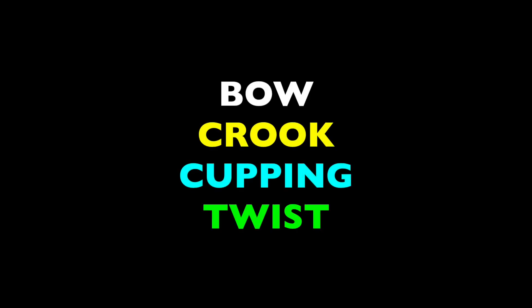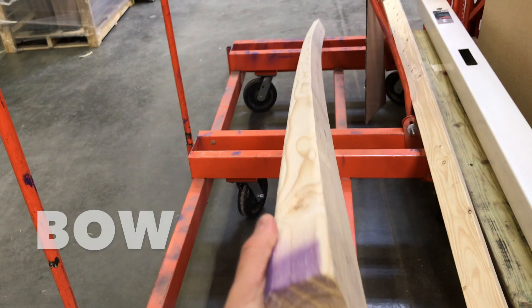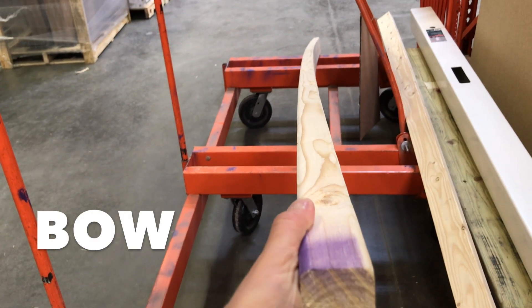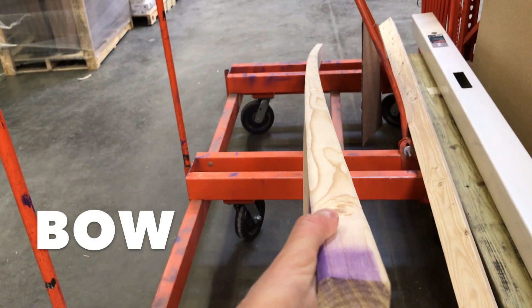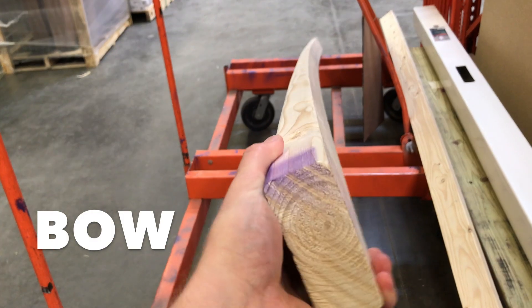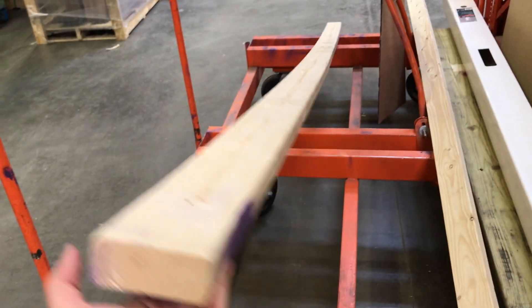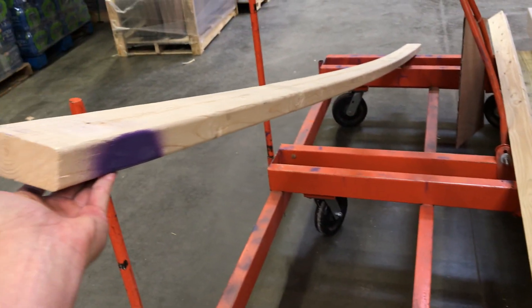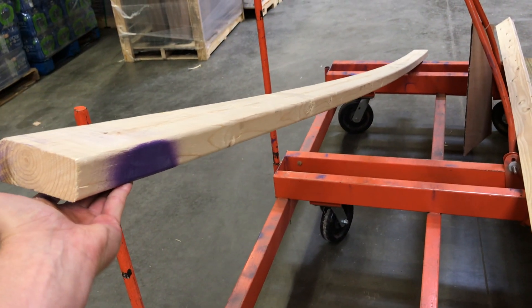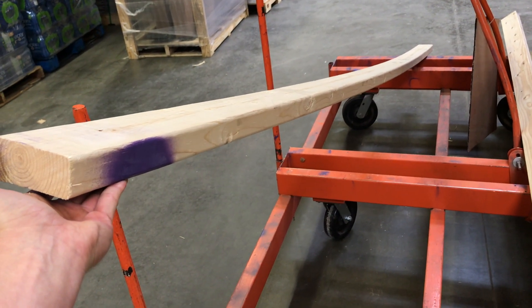The four types of wood warpage are bow, crook, cupping, and twist. A bow is a longitudinal warp along the wide face of the board. When I was growing up we called this a ski because it sort of looks like a snow ski with the upturned ends.